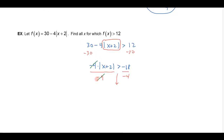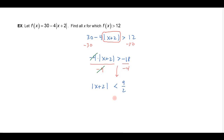So dividing both sides by negative 4, the negative 4s cancel and I get the absolute value of x plus 2 is now less than — because there was a negative, it changed the greater than into a less than. This is going to be a compound inequality. When I simplify, I get 9 halves. Once I have that, I can go ahead and break it up into its two parts.